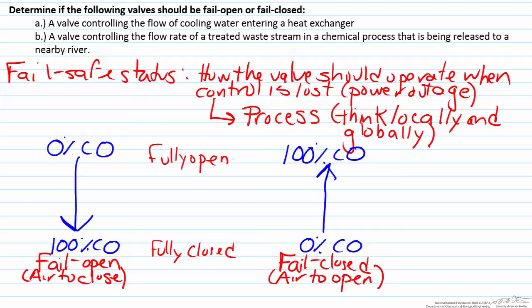By convention, the gain for a fail closed valve is positive and the gain for a fail open valve is negative. This is solely by convention and is dictated by the fact that a majority of valves and processes fail closed.